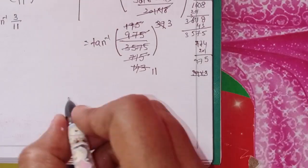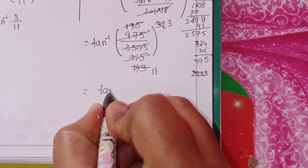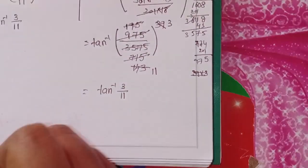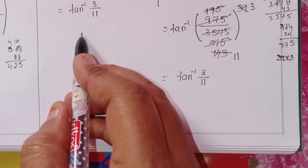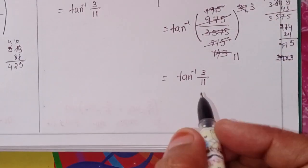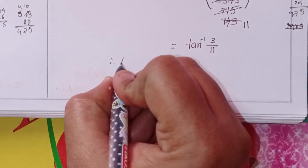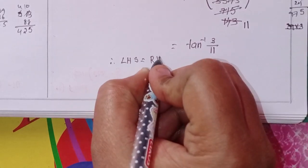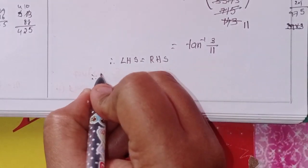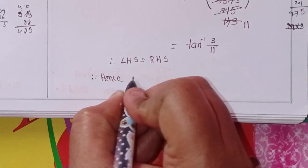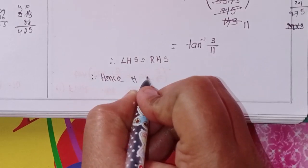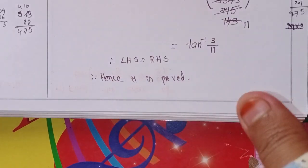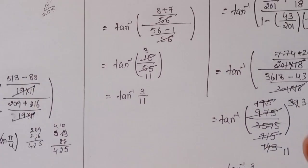So tan inverse 3 by 11 will come. This is LHS and this is RHS. Therefore LHS equals RHS. Hence it is proved. This is about question number 4 solution.